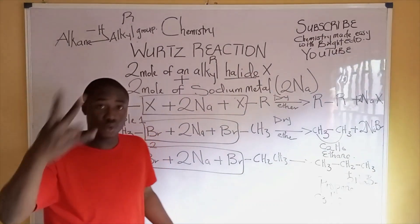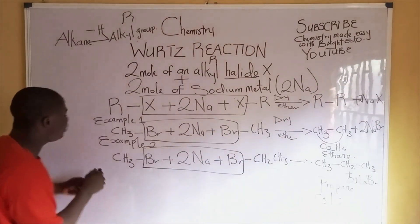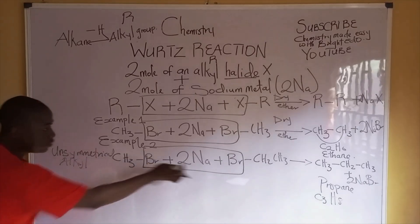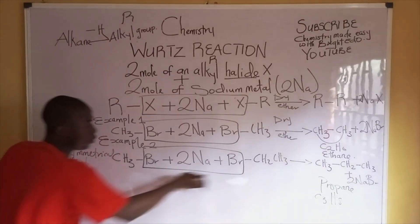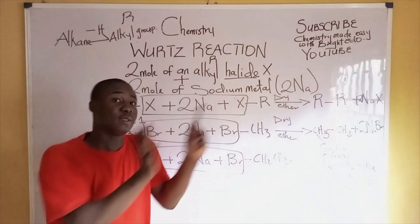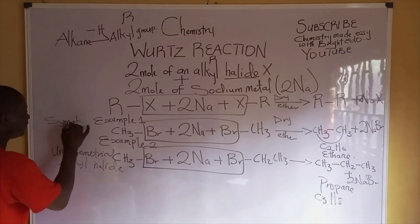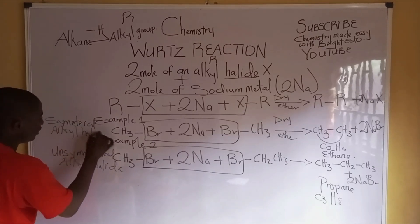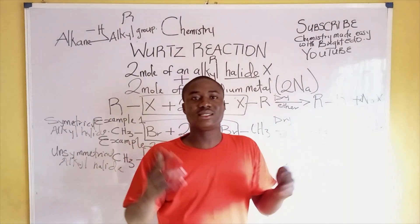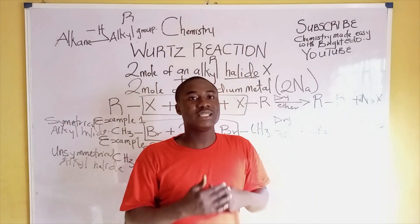The alkyl halide can be in two forms: the symmetrical form, where the two alkyl groups are the same, and the unsymmetrical form, where the two alkyl groups are different — one methyl and one ethyl. This is how the Wurtz reaction works. I believe you now understand the concept. Don't forget to subscribe to Chemistry Made Easy with Bright Eddy.